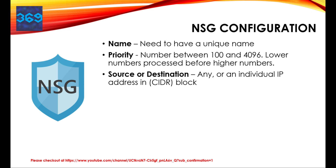The ability to specify multiple individual IP addresses and ranges in a rule is referred to as augmented security rules, and we are going to look at those. Augmented security rules can only be created in network security groups that are created through the Resource Manager deployment model. You cannot specify multiple IP addresses and IP address ranges in an NSG created through the classic deployment model. That is very important to note.